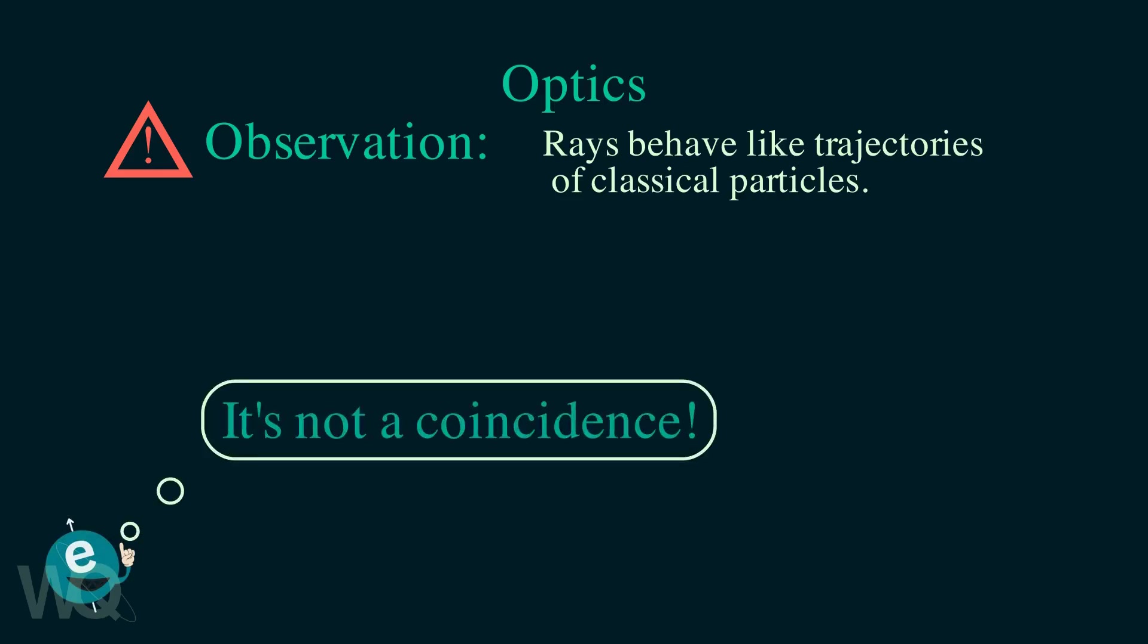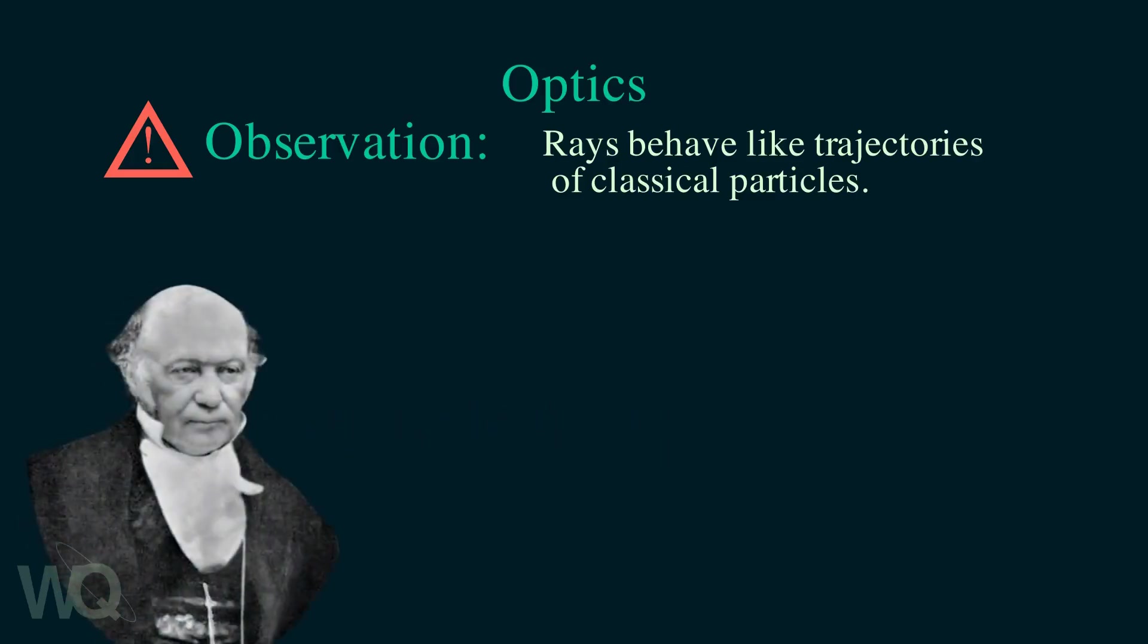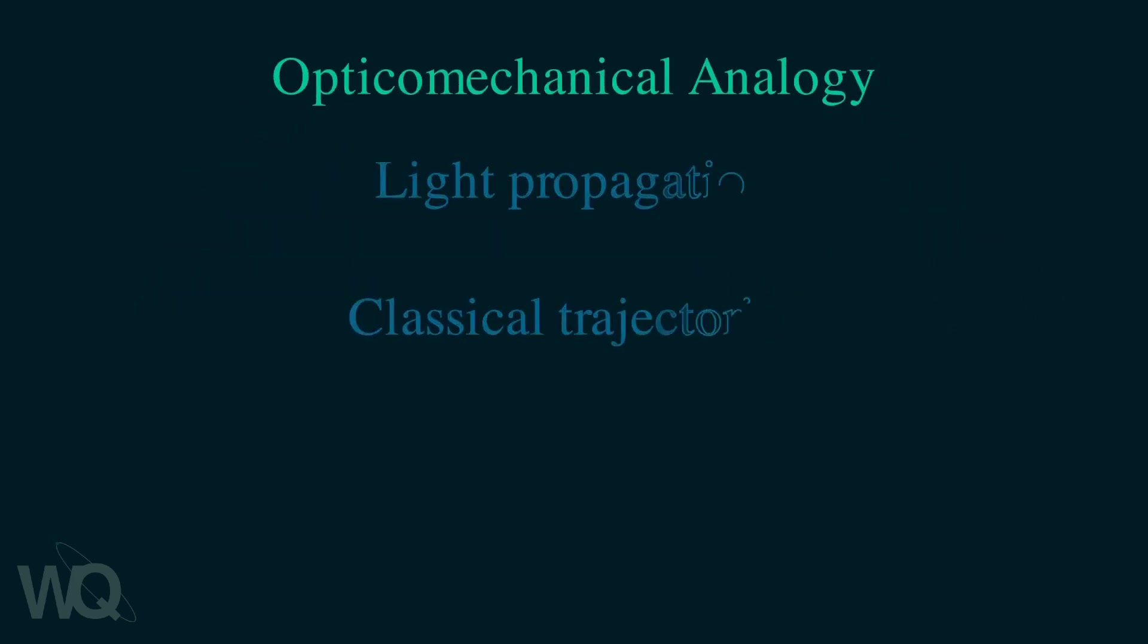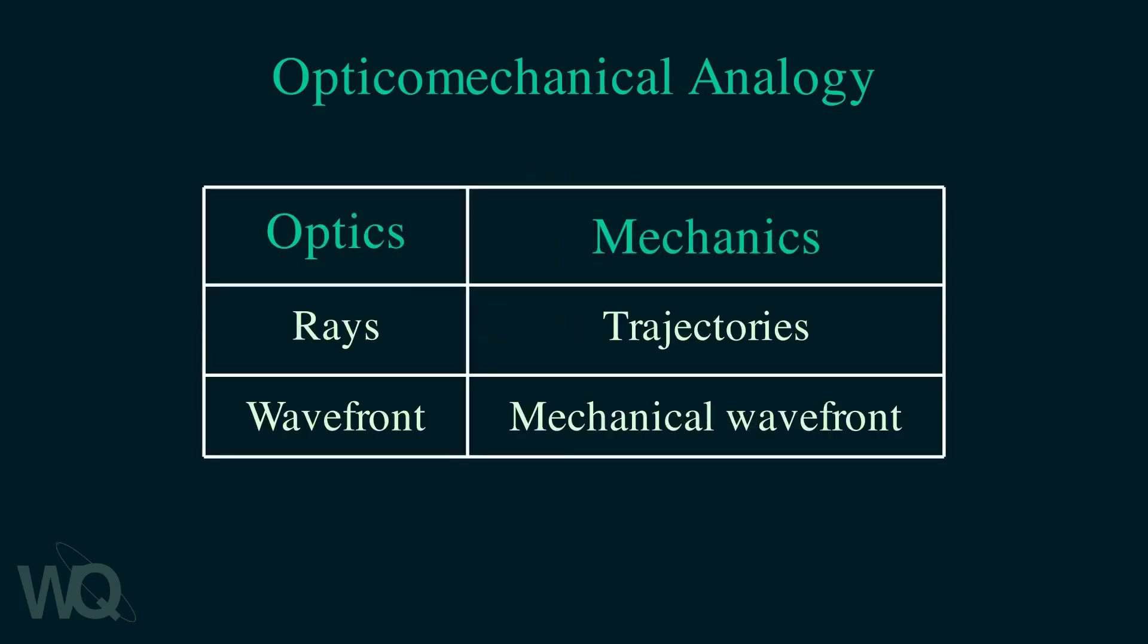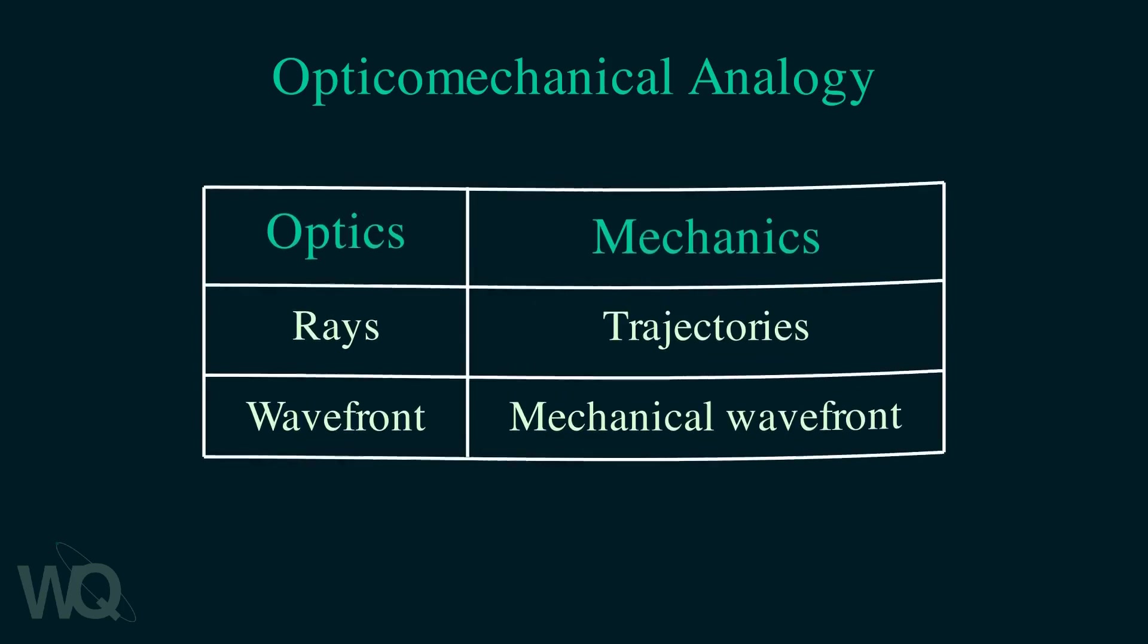This question was considered by many and among them was Sir William Rowan Hamilton who formulated the optico-mechanical analogy. The optico-mechanical analogy says that there is a certain equivalence between the propagation of light and trajectories of classical particles. Hamilton drew parallels between optics and mechanics. He said that the rays of light correspond to trajectories of particles and the wave fronts in optics correspond to something which we will call the mechanical wave front.